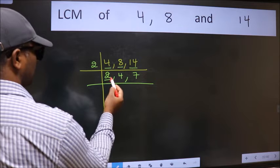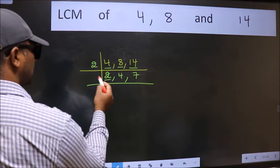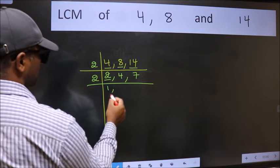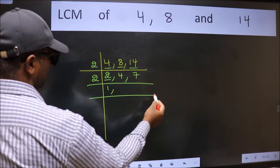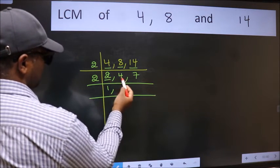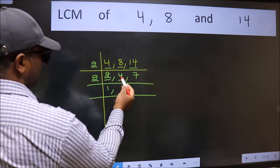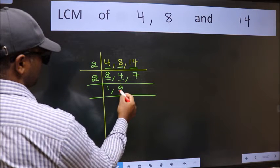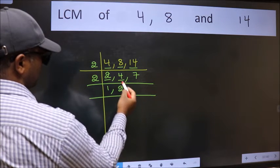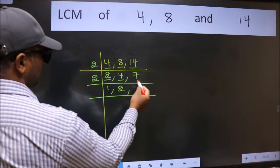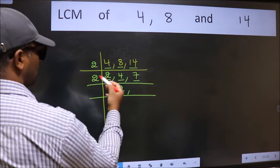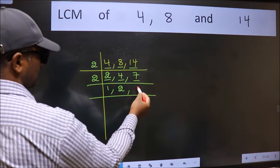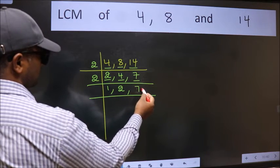Now here we have 2. 2 is a prime number so 2×1 is 2. The other number 4 — when do we get 4 in the 2 table? 2×2 is 4. The other number 7 is not divisible by 2, so we write it down as it is.